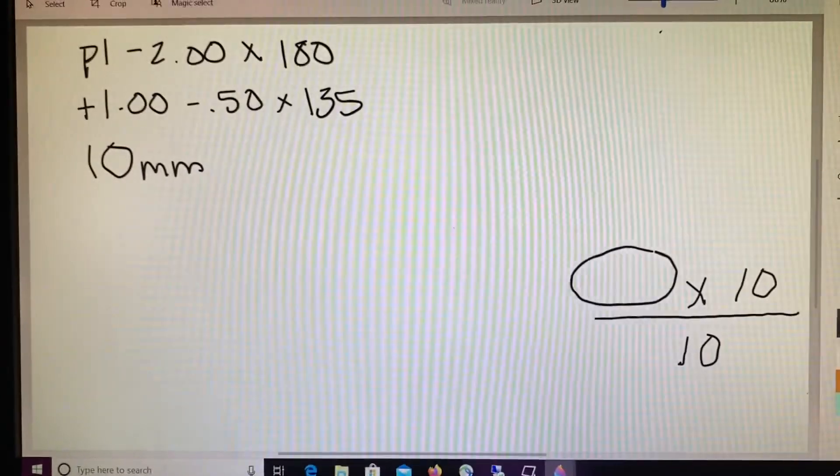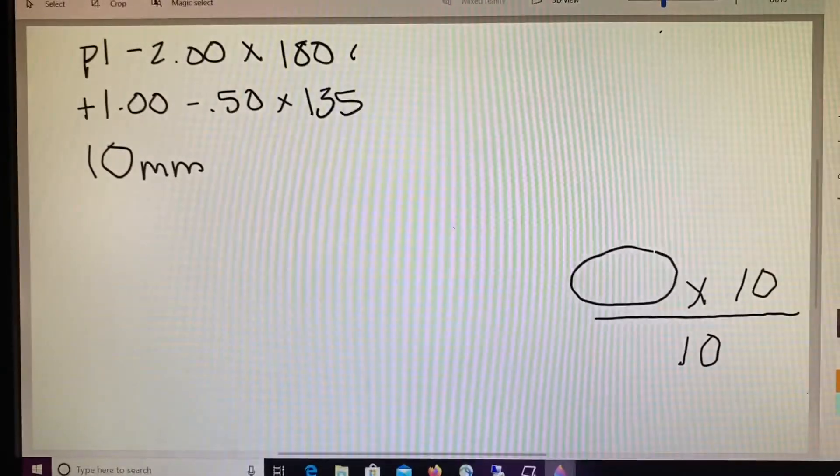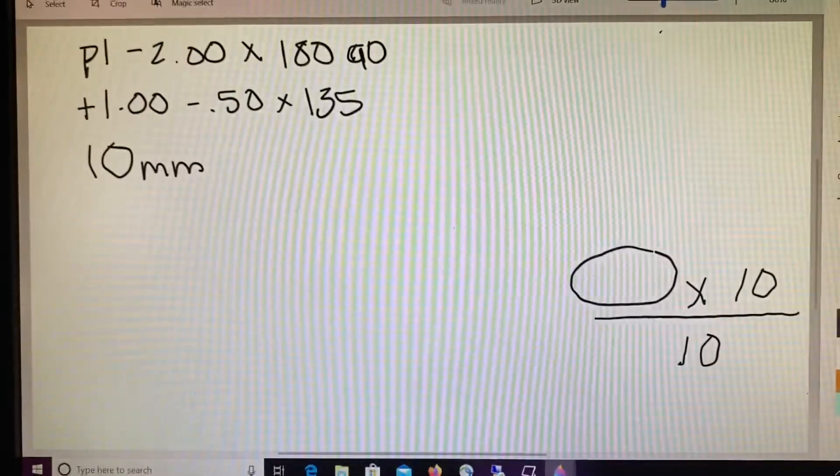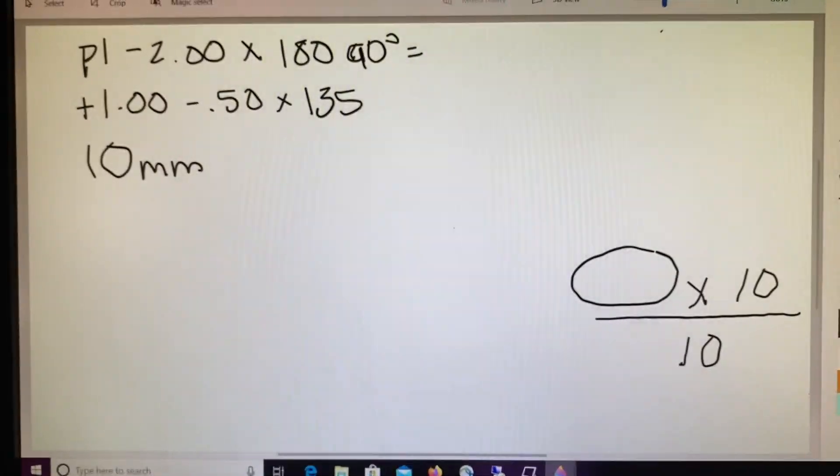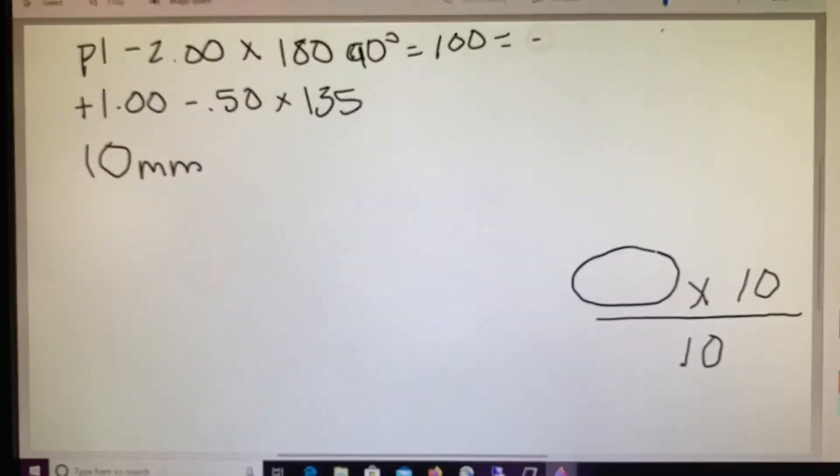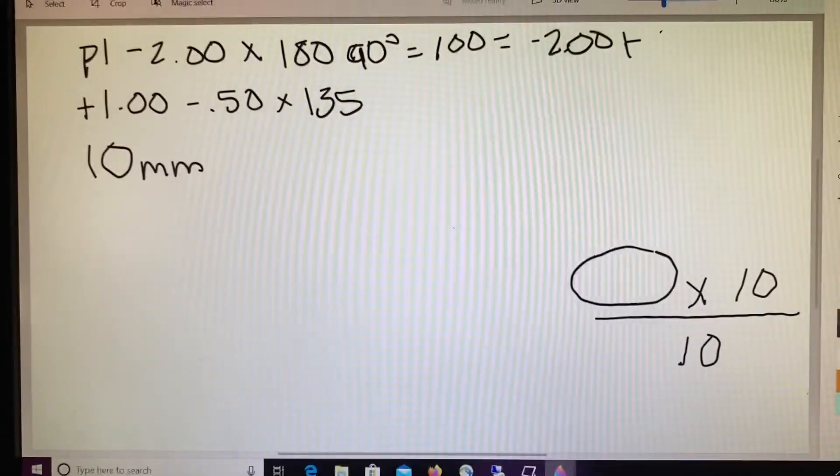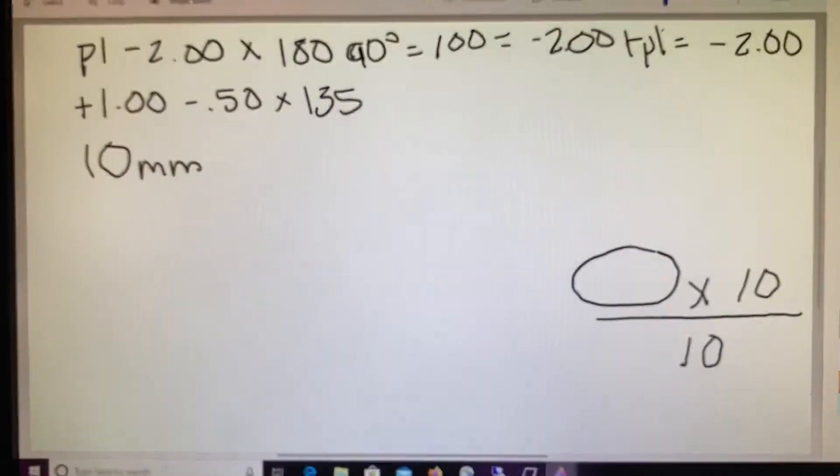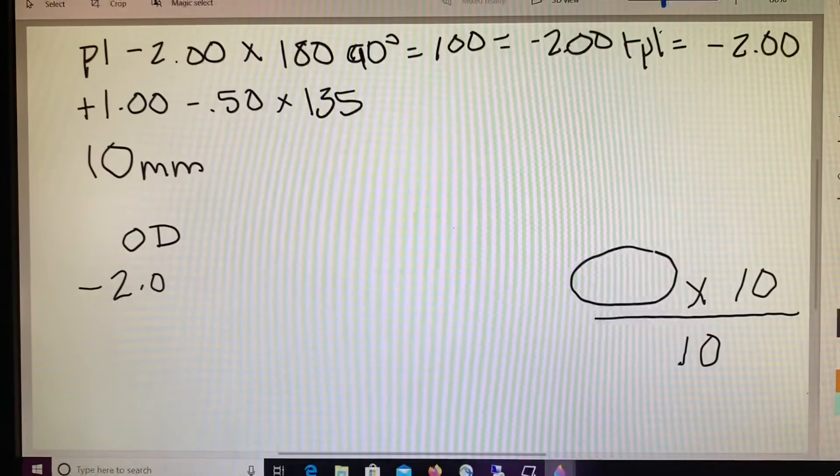So right now we are at 180 on the right side. We need to know what the power is at 90. And the difference between the two is 90 degrees. So we're going to be using 100% of our cylinder. So 100% of our cylinder is a minus 2 combined with plano or 0 equals minus 2. So our right side of the patient is a minus 2 at 90.